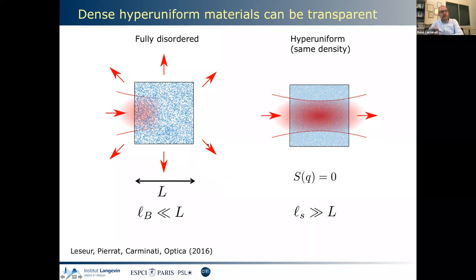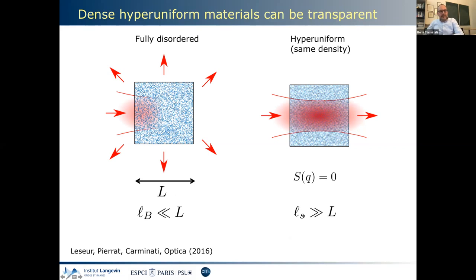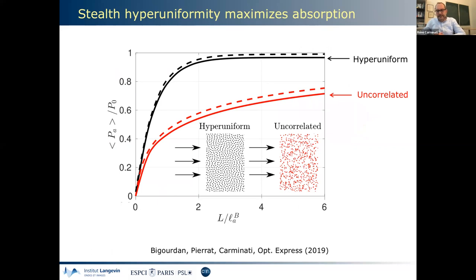In summary: you can start from a situation where the mean free path is much smaller than the thickness — a strongly scattering system — and with the same scatterers and same density distributed on a hyper-uniform pattern, you get an effectively transparent medium, meaning the correlation-corrected mean free path has become much larger than the thickness.